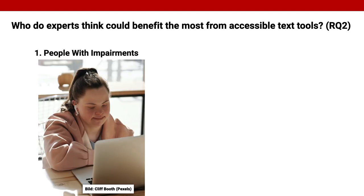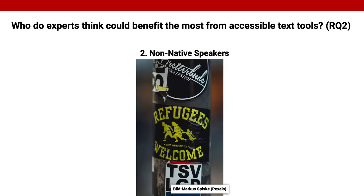The second research question was: who do experts think could benefit the most from accessible text tools? The largest stakeholder group is people with impairments or learning difficulties. Relevant subgroups include people with Down syndrome, as well as people with cognitive or intellectual disabilities. However, Participant 16 also pointed out that people with cognitive impairments may not need assistance because they have caregivers, while acknowledging situations where the degree and severity of impairment is not as severe and where solutions may be helpful. Experts also recognized non-native speakers as stakeholders. Participant 2 reported that non-native speakers with a migration background just don't dare to communicate because they are afraid. Participant 8 pointed out the role of tourists who, for example, visit a museum and have little experience in the foreign language they have learned.